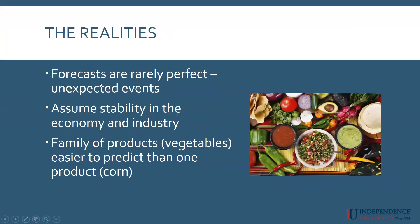So there are three different time horizons for forecasts. The realities of forecasts is they're rarely perfect — there are always some kind of unexpected events that come up, and organizations do the best they can. They try to come up with as close to budget as they possibly can, but there's always something unexpected. A forecast also assumes that the economy and the industry you're in are stable, that there aren't any major changes going to happen.